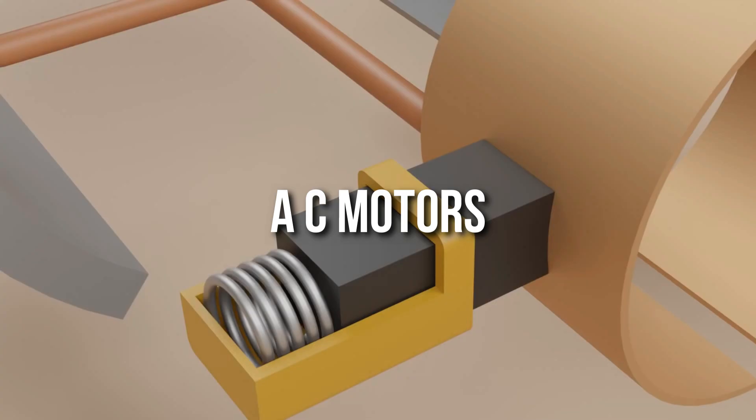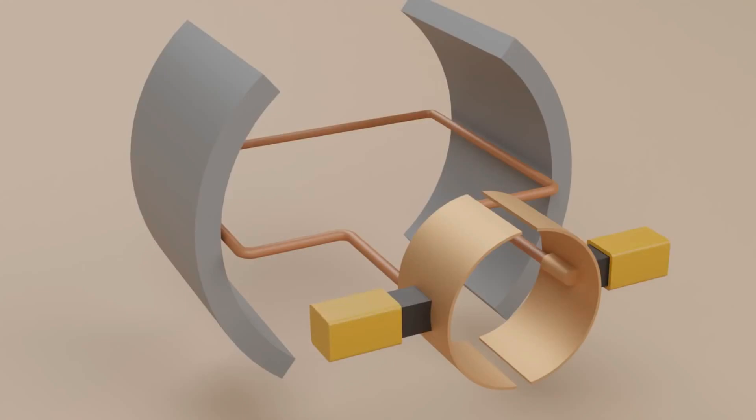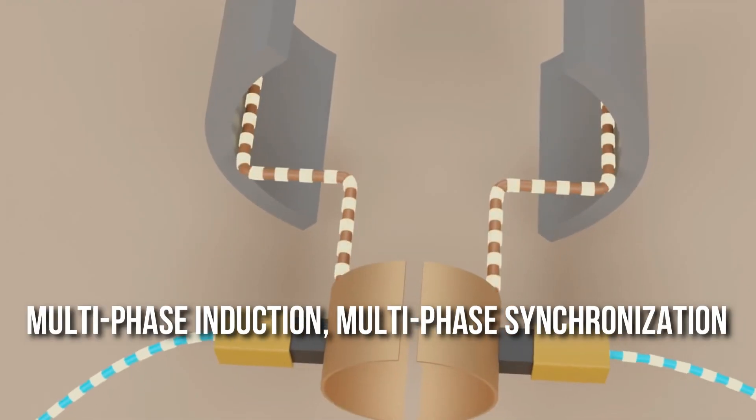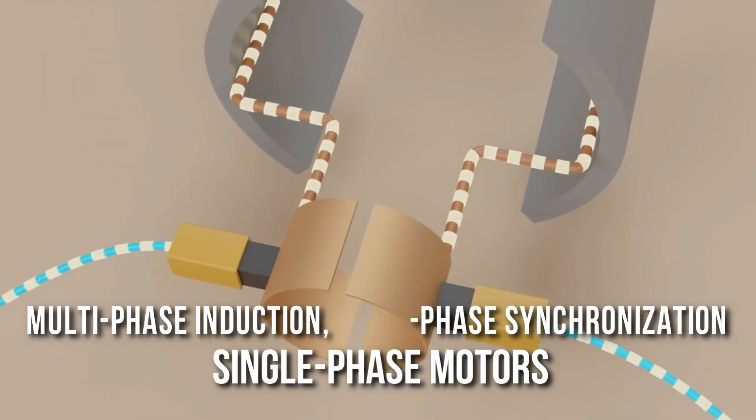AC motors are much more common than DC types as almost all power supply systems carry alternating currents. There are three main different types of motors, that is, multi-phase induction, multi-phase synchronization and single-phase motors.